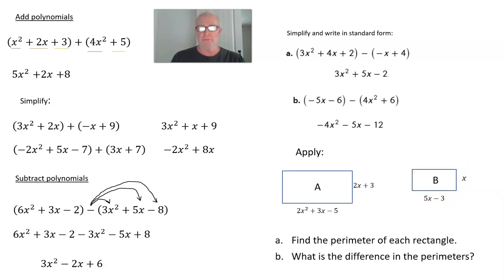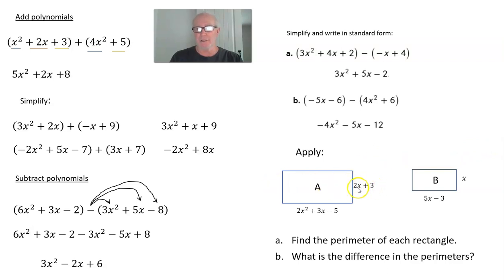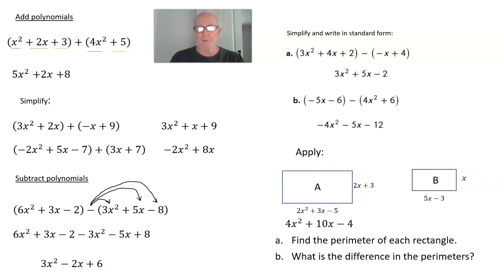We want to find the perimeter of each rectangle and then ask what's the difference of the perimeters. Pause the presentation and see if you can find the perimeter of each rectangle. For rectangle A, opposite sides are the same, so we add all four sides: (2x + 3) + (2x + 3) + (2x² + 3x − 5) + (2x² + 3x − 5). The perimeter of rectangle A is 4x² + 10x − 4.